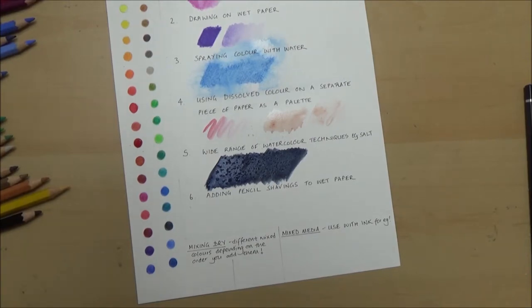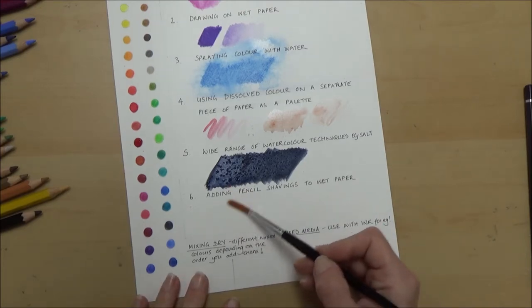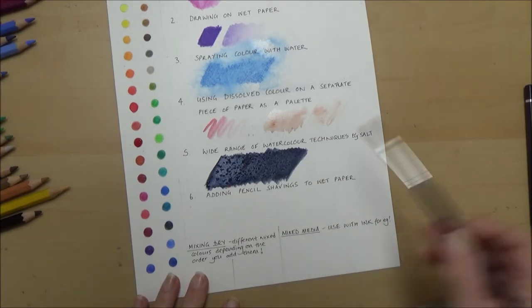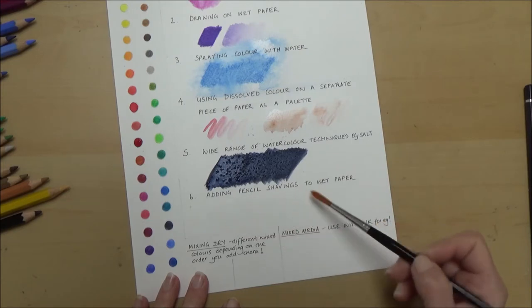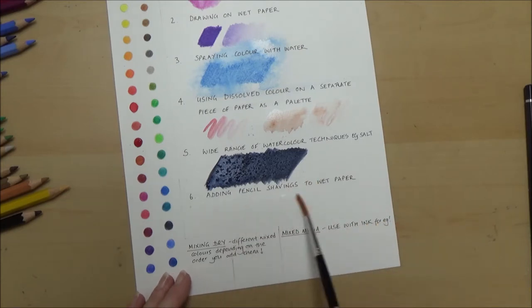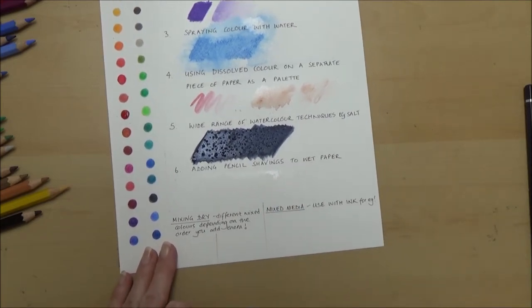The last technique that I'm going to use for the wet technique section is adding pencil shavings to wet paper. This was one of the ideas that was in the little booklet and something I hadn't tried before so I was keen to see how that worked. I put quite a lot of water on the paper for this technique.